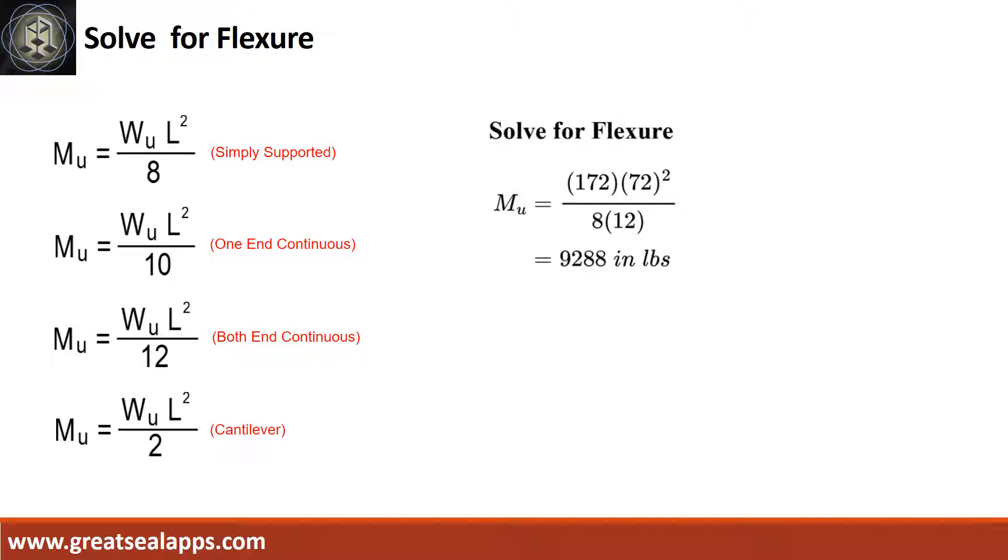Given factored load equals 172 pounds per foot, L equals 6 feet. The maximum moment is 9,288 inch-pounds.